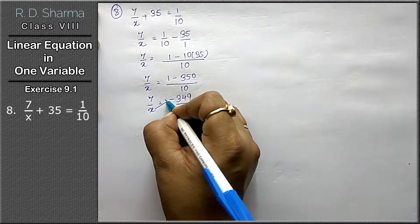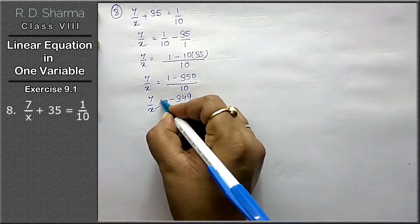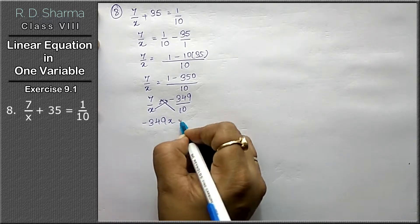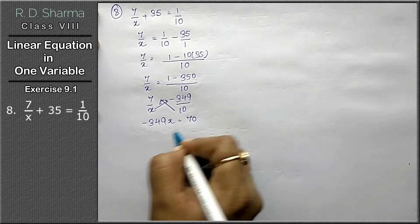x is side chala jayega, 10 is side chala jayega. To reekhi kiya ban gaya? Minus 349 x equals to 7 tens of 70.